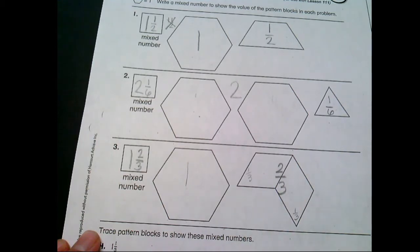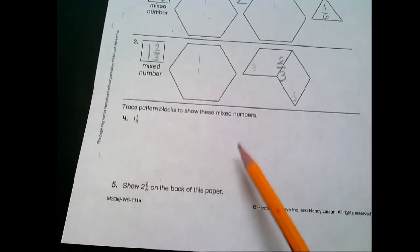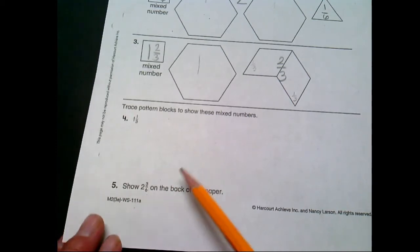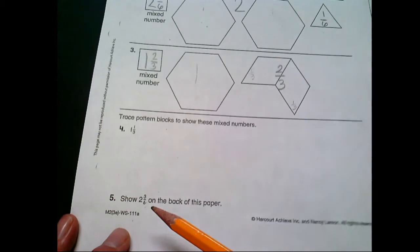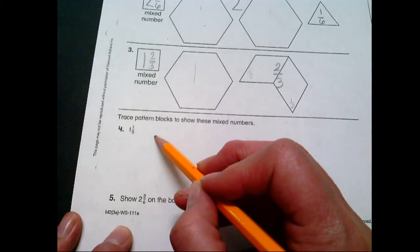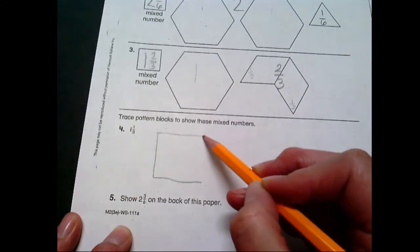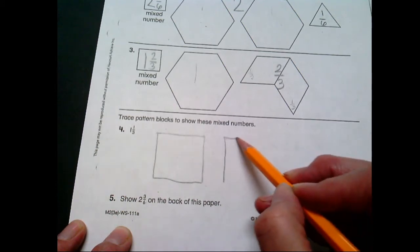Now on the bottom here it asks us to trace pattern blocks to show these mixed numbers. Well, guess what? You don't have pattern blocks at home, so how can we do this? Well, let's use a different shape, okay? Let's use a different shape to show one and one third. You certainly could draw the hexagons and parallelograms if you want, but what if we draw two squares?